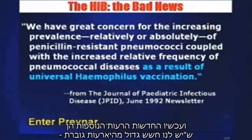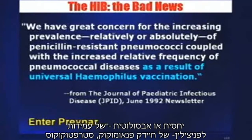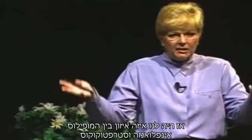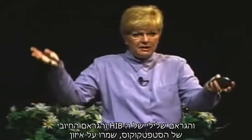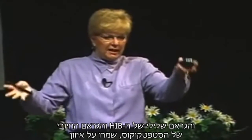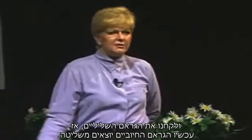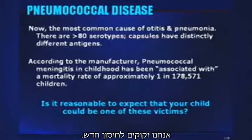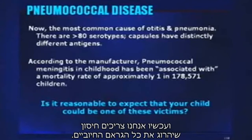There is great concern for the increasing prevalence of penicillin-resistant pneumococcus bacteria — the strep bacteria — because we've killed off all the gram-negative HIB. We had a balance between H-flu and strep: the gram-negative H-flu and the gram-positive strep kept each other in balance, and we took away the gram-negative. So now the gram-positives are going crazy. Now what do we do? We need a new vaccine to kill off all the gram-positives.